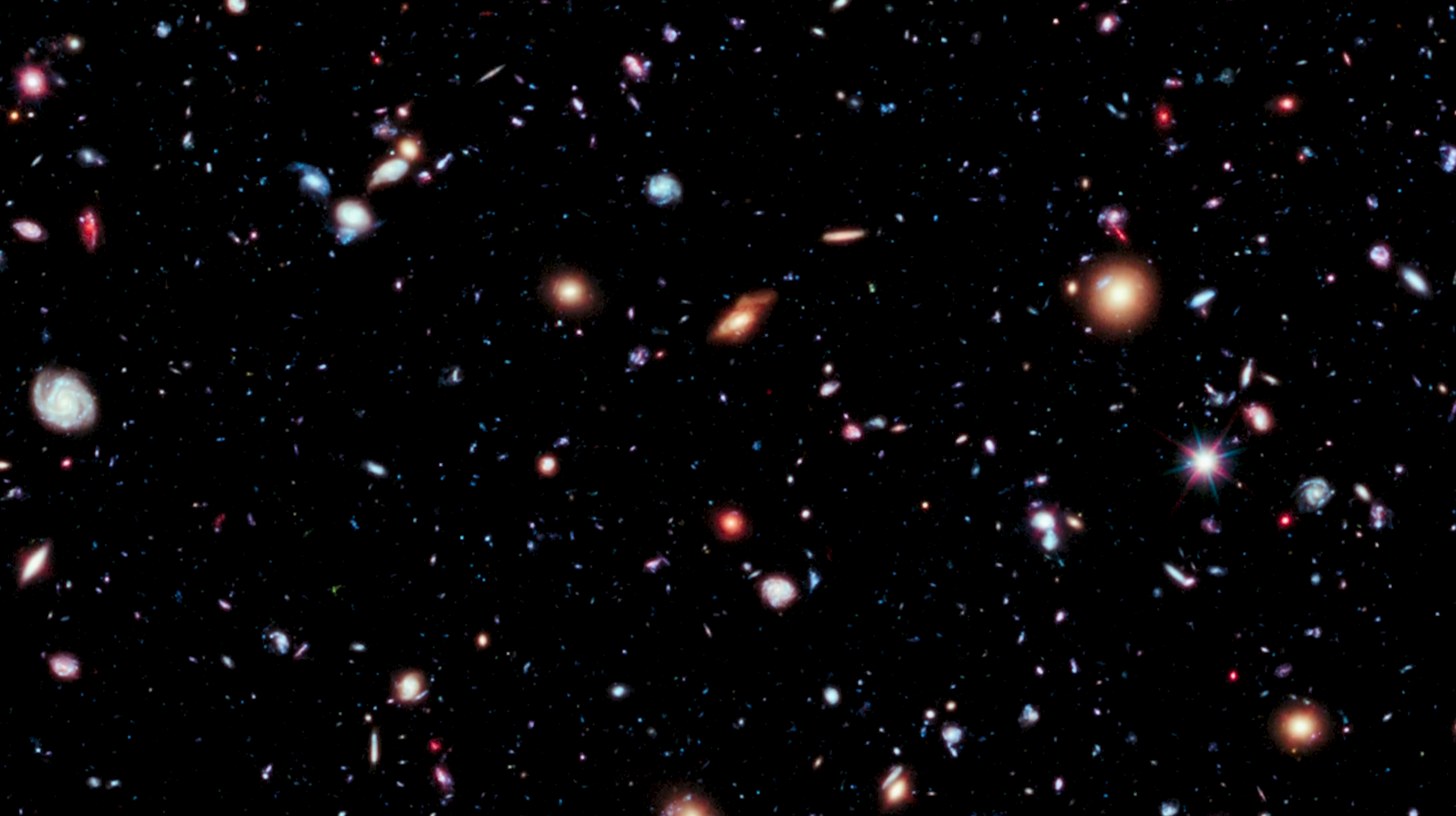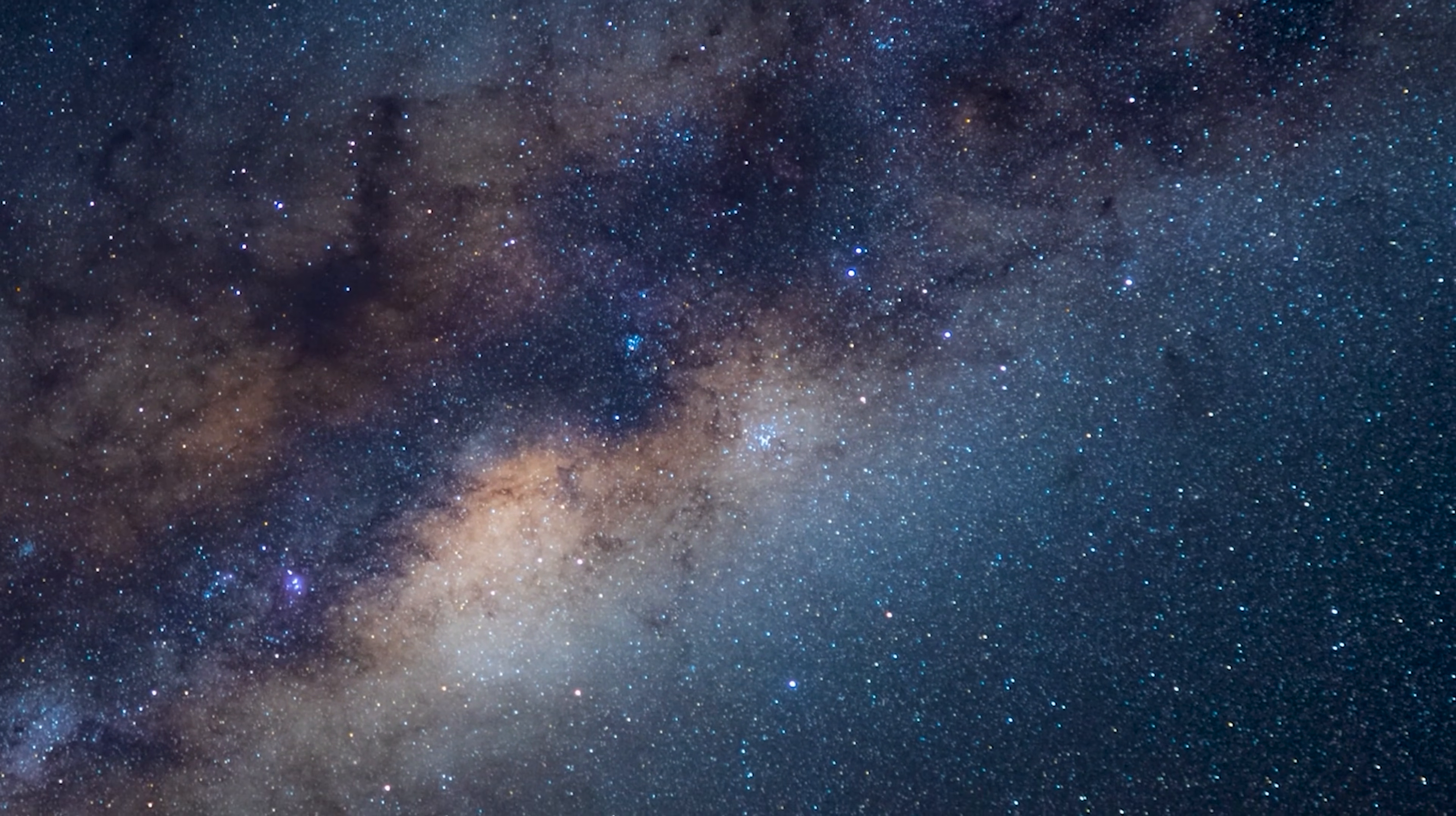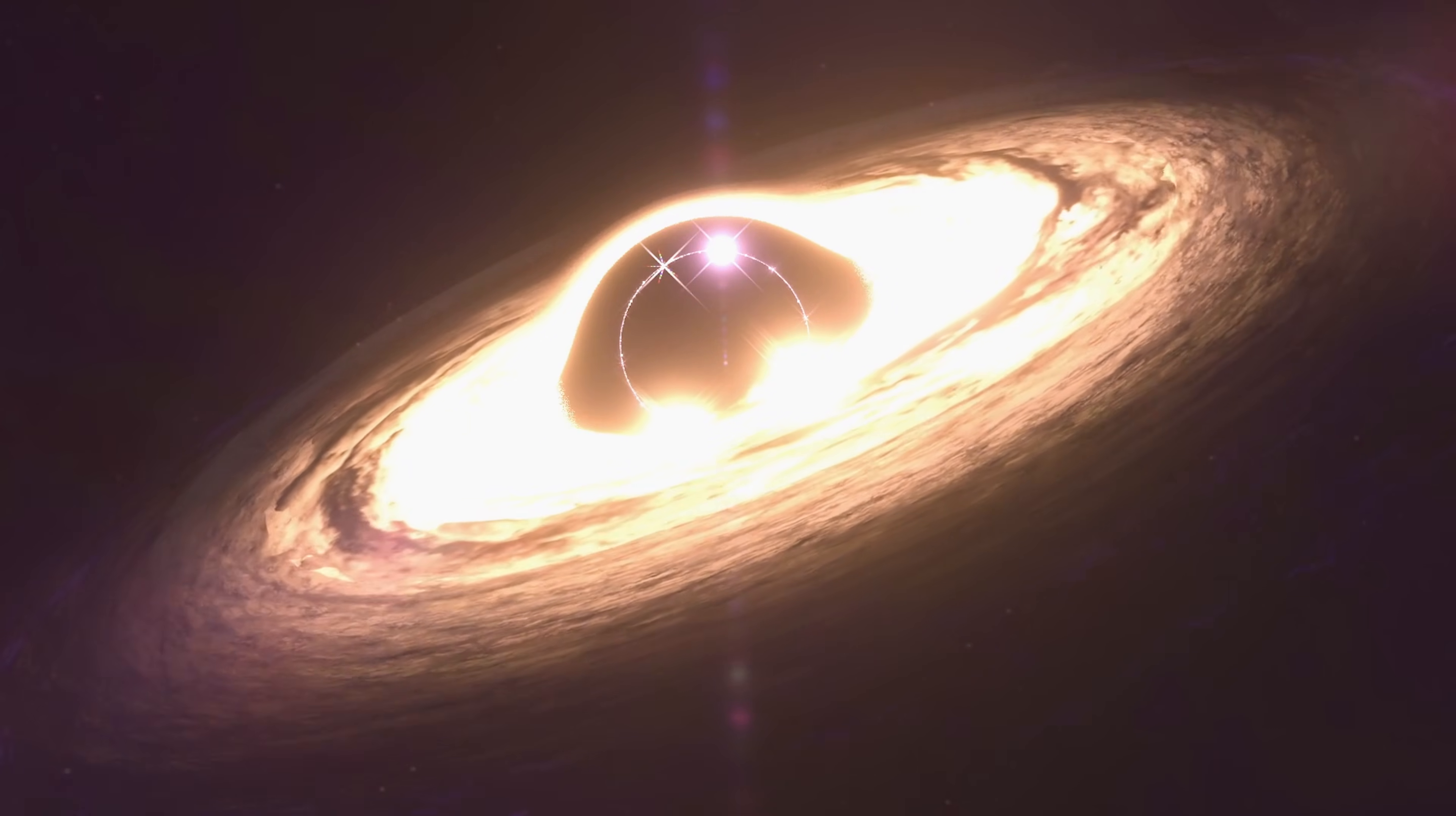Then came yet another surprise. In a large Webb survey of early galaxies, researchers noticed something deeply unexpected. Many of these galaxies appear to rotate in the same direction. According to the Big Bang model, galaxy spins should be randomly oriented. This alignment hints at a level of order in the early universe that shouldn't exist. Some scientists have even speculated that the universe itself may have begun with an initial spin. That idea leads to one of the most radical possibilities of all, that our universe may have formed inside a black hole. In the black hole universe hypothesis, the entire cosmos is the interior of a rotating black hole formed in another universe. It's a fringe idea, but one that's being taken more seriously as observations continue to defy expectations.